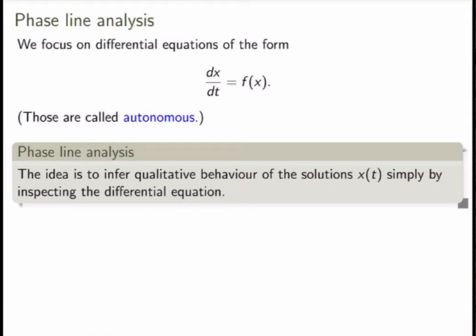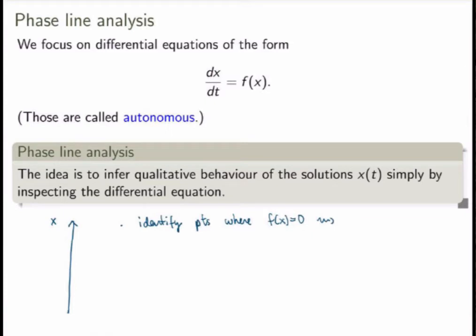So what is phase line analysis? We draw a vertical line called a phase line, which parameterizes all solutions x of the differential equation. On this line we first identify points where f equals zero. If x equals some value where the right-hand side is 0, this provides a constant solution — also called an equilibrium solution — because at that value both the left-hand side and the right-hand side are 0. These points give us the constant or equilibrium solutions of the model.